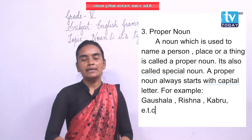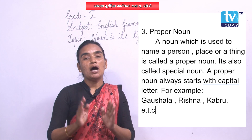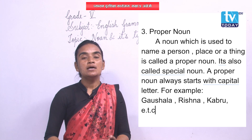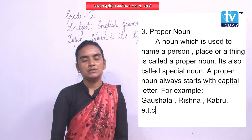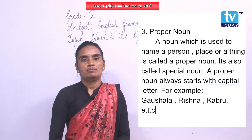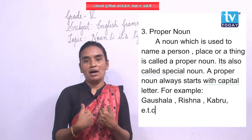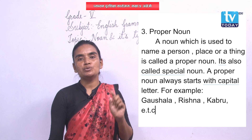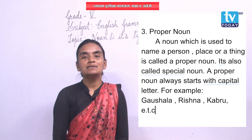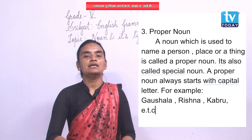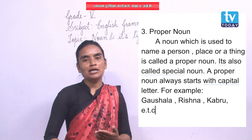One more important thing: when you use a proper noun in a sentence, proper noun always starts with a capital letter. The initial letter of the word which is a proper noun must always be capital. For example, if I write the sentence 'Kathmandu is the capital city of our country,' then K in Kathmandu should be capital.